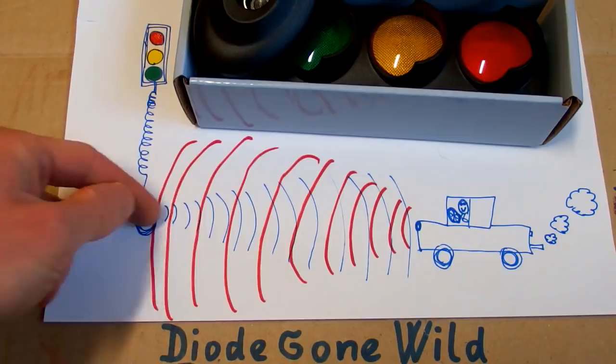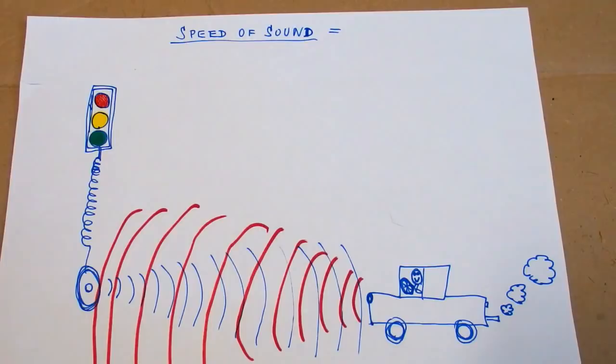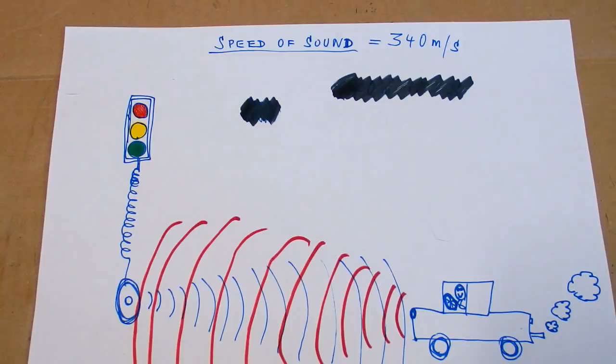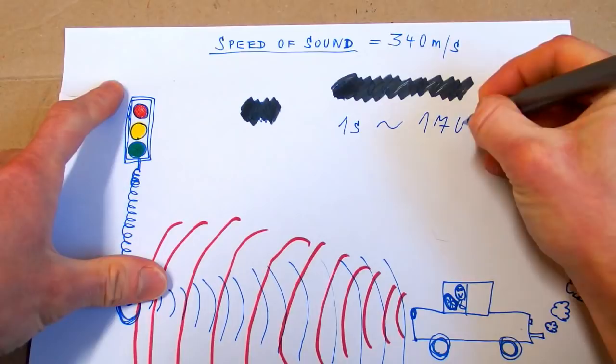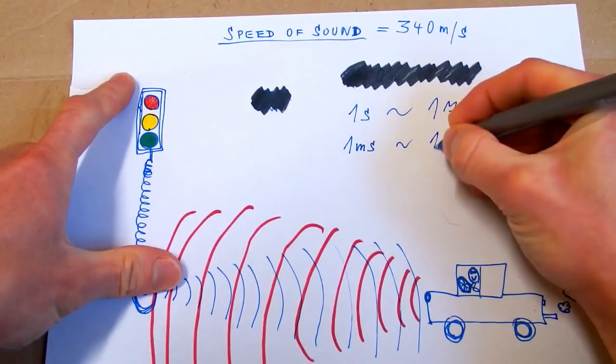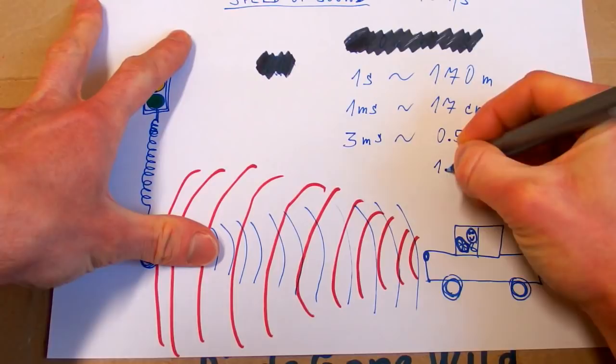The ultrasound will bounce off your car or anything else and come back with a delay. The sensor will measure the delay and calculate the distance. The speed of sound is about 340 meters per second. But the sound has to travel the distance twice. So one second is going to be about 170 meters.